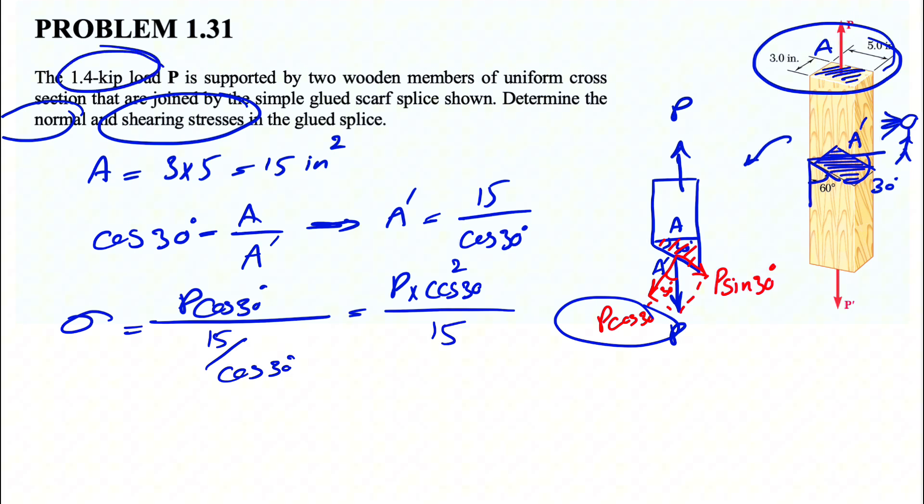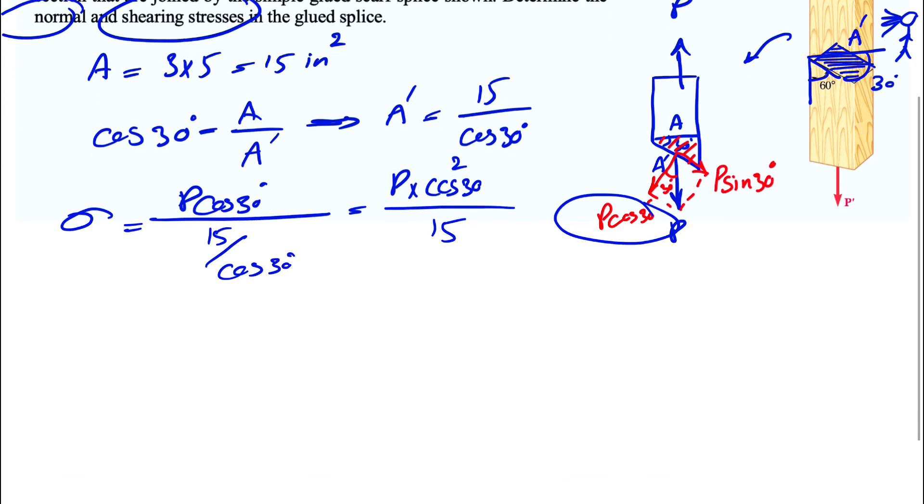You already know P in the question is 1.4 kip. So the normal stress would be 1.4 kip times cosine squared of 30 divided by 15 inches squared. This is going to give us, so keep in mind that we have kip over inches squared, and we're going to get ksi for the unit of stress.